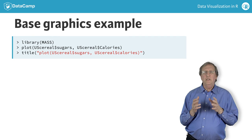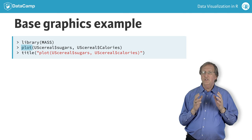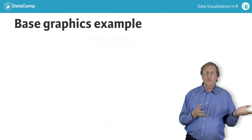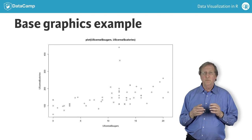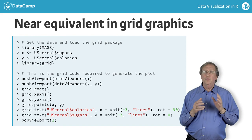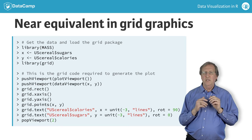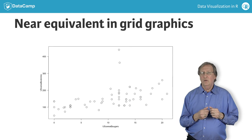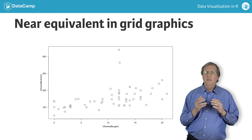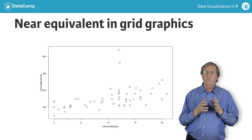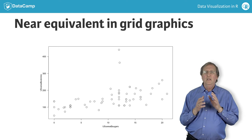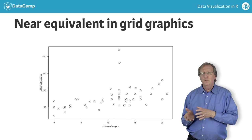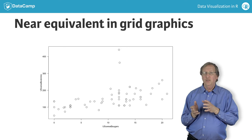This first example uses the base graphics plot function to generate a simple scatter plot of calories versus sugars from the U.S. cereal data frame in the MASS package. The second example uses grid graphics to create essentially the same plot. Grid graphics offers much greater power and flexibility than base graphics, but this comes at the price of a steeper learning curve and greater effort required to create simple plots. This is why the grid graphics system is mainly used by R package developers to create special visualizations or other graphic systems like the lattice and ggplot2 packages.